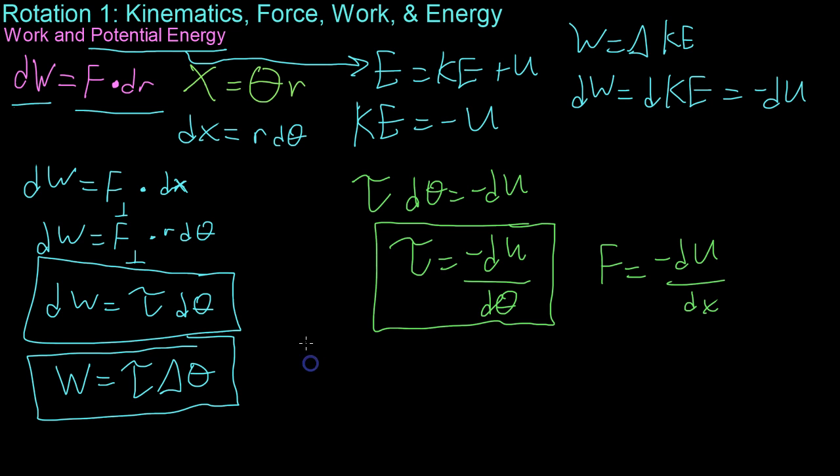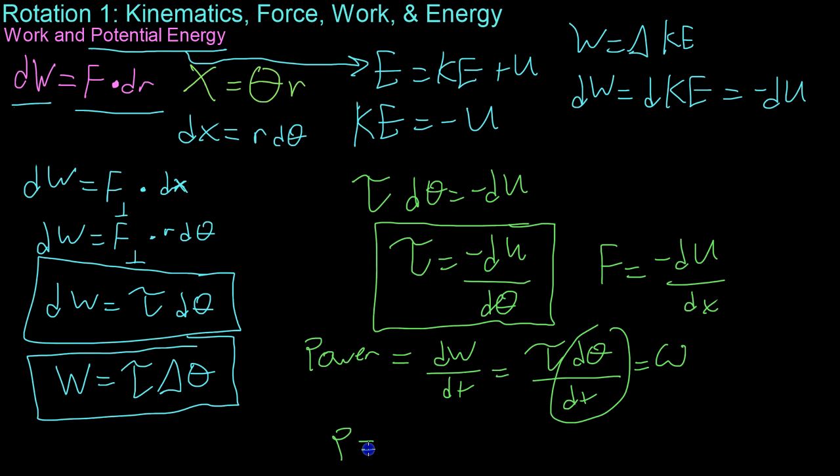And the last thing we're going to be looking at very briefly is power, which, if you'll recall, is simply the change in work with respect to time. And because we know that work is tau times d theta, well, d theta dt is simply omega. Therefore, we know that power equals torque times omega.